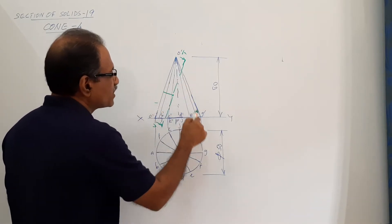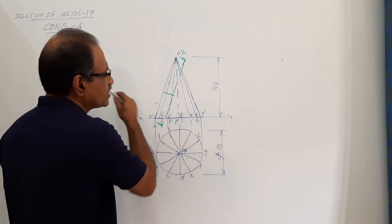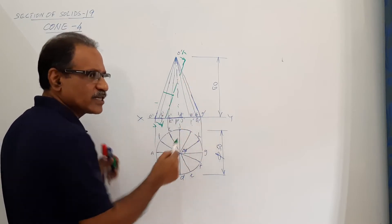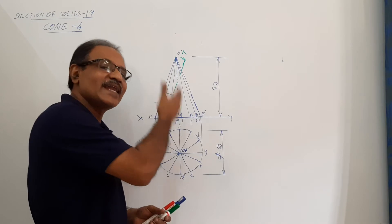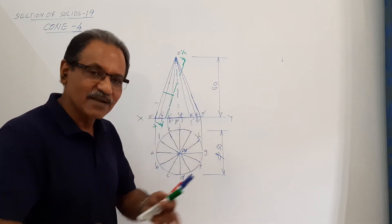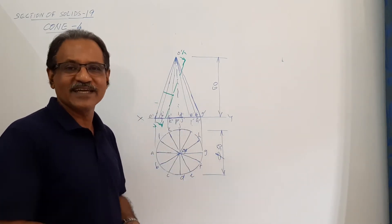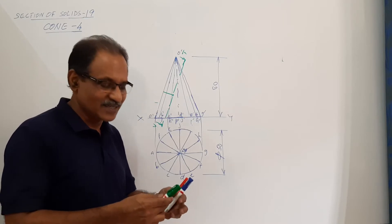What is the shape of the remaining portion after removing this? It will also be an isosceles triangle. The elevation of the cone is an isosceles triangle. If you draw a line parallel to one side, the remaining figure is also an isosceles triangle.